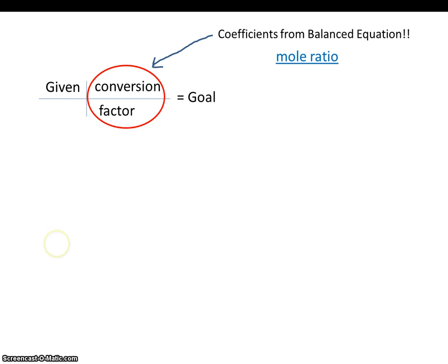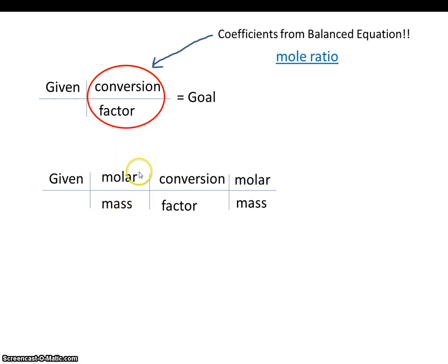The other template that you're using will look something like this. The given, and then we'll also be using a conversion factor. This will be the same conversion factor as we used in the previous template. That also comes from the balanced equation. But on either side of the conversion factor will require the molar mass. This would be the molar mass of the given, and over here would be the molar mass of the goal.